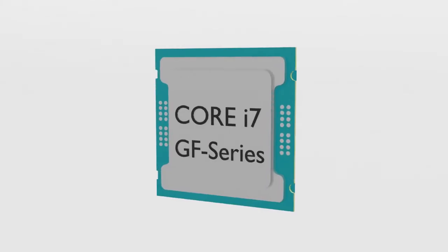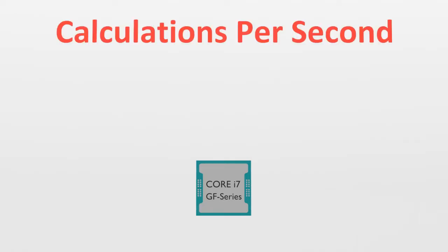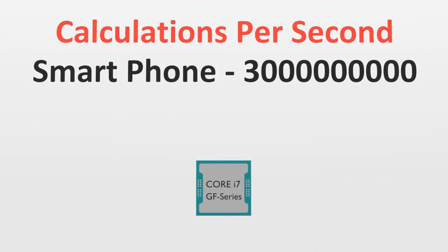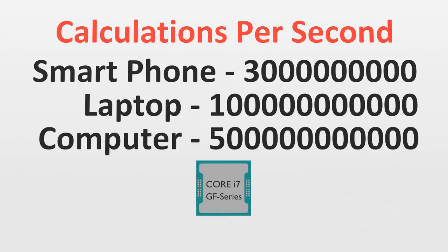Want to know how quickly? It would take you a whole year to count to one billion. In the time it takes you to clap your hands, a smartphone can do three billion calculations, a laptop can do one hundred billion in the same time, and a desktop computer can do five hundred billion. Wow, I bet you wish you could answer your maths questions that fast!